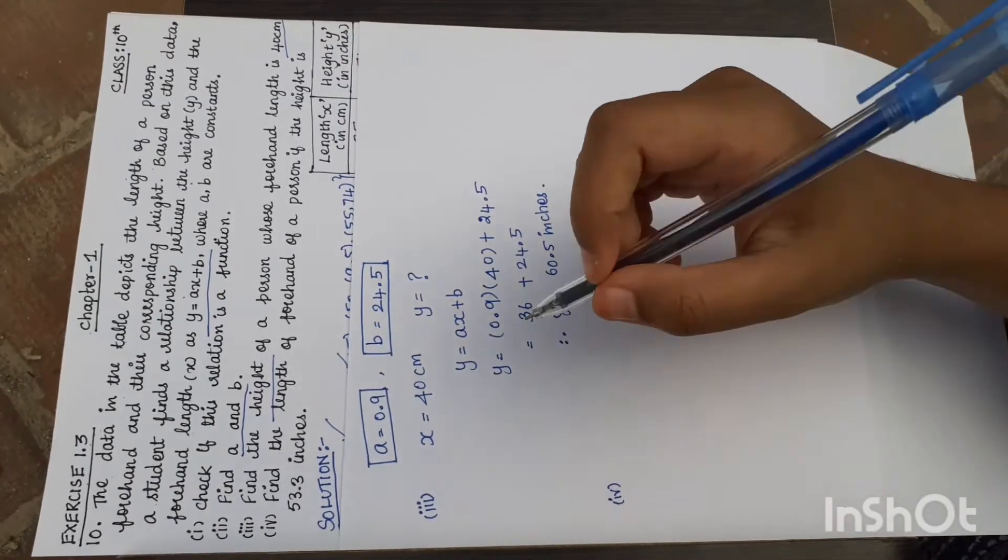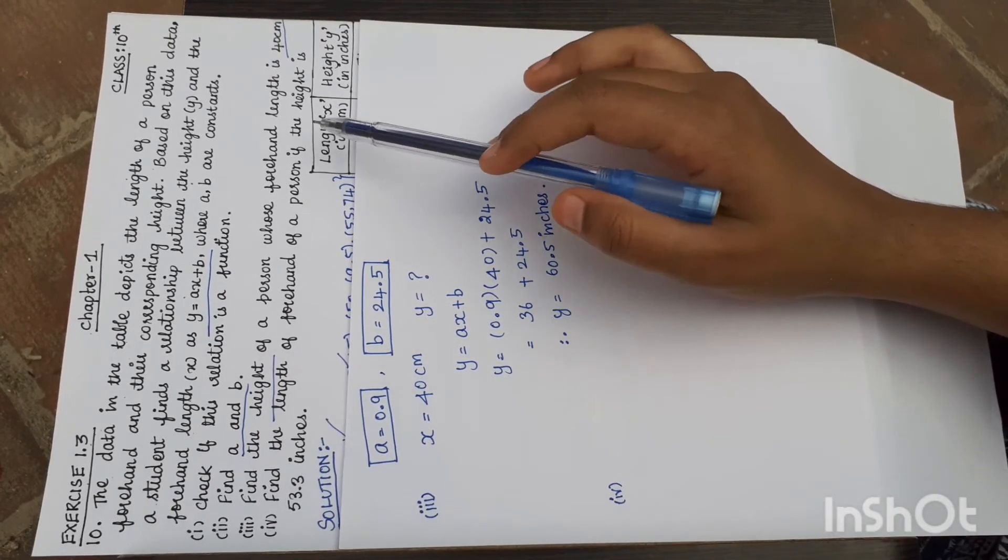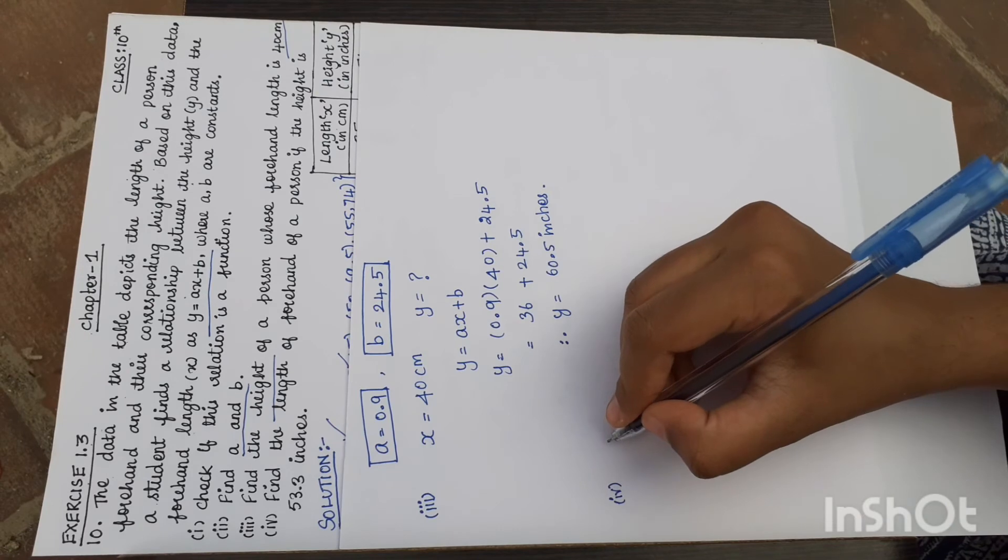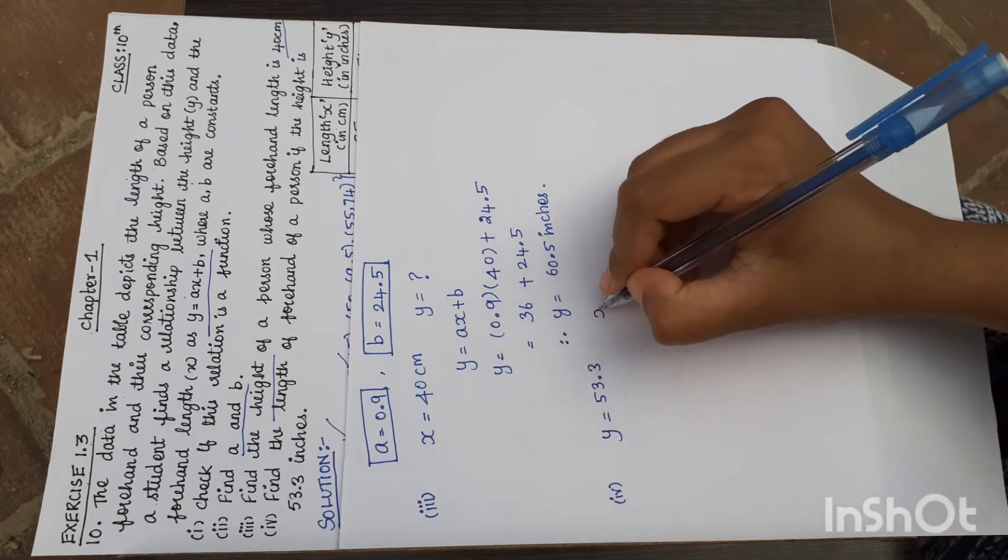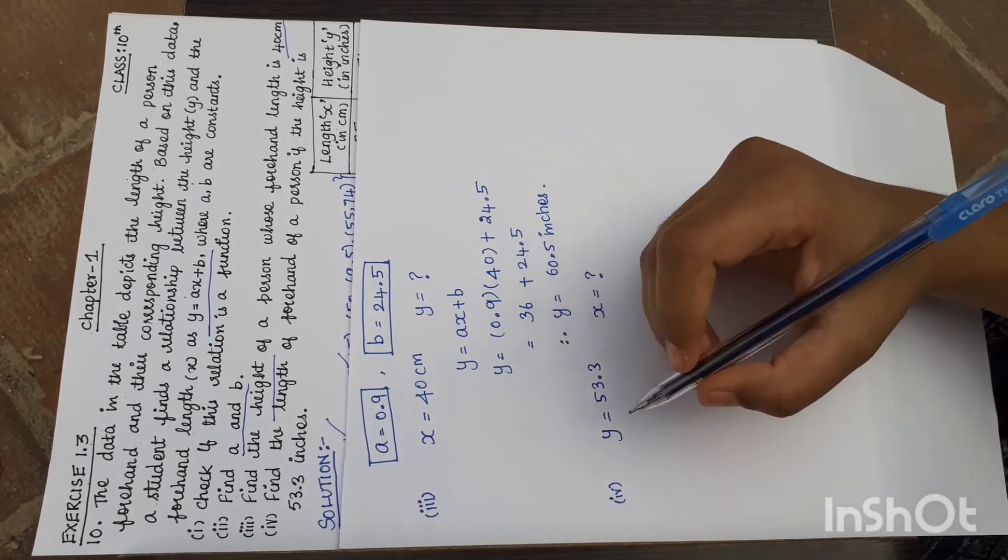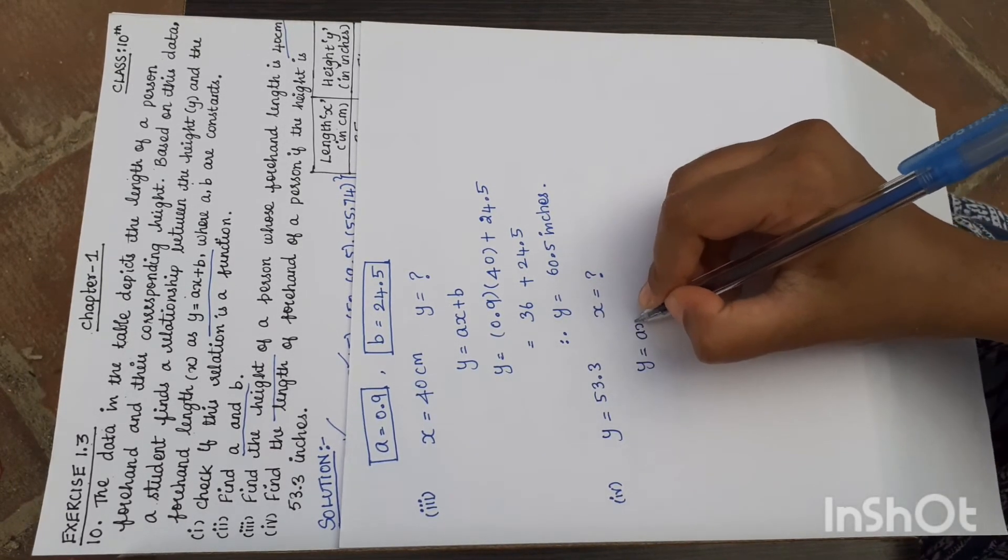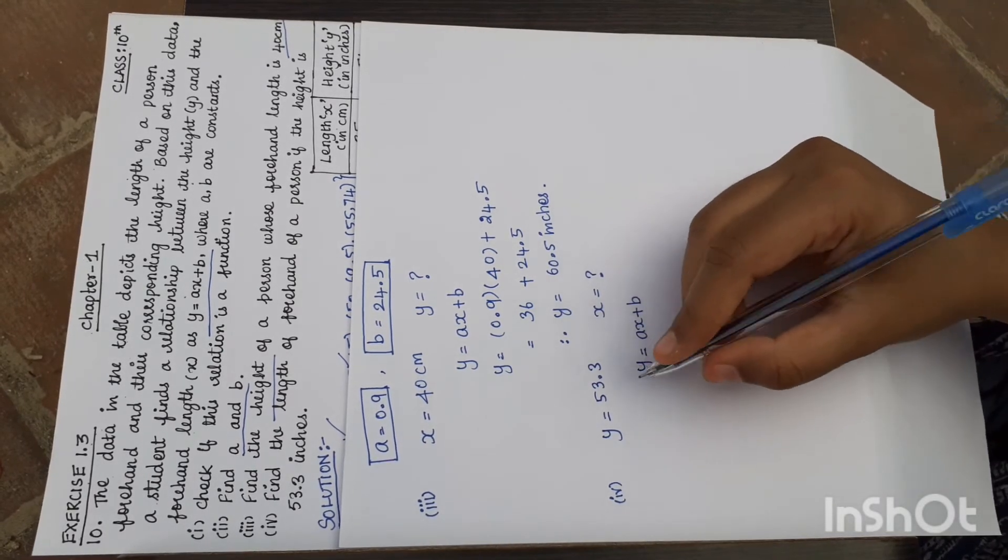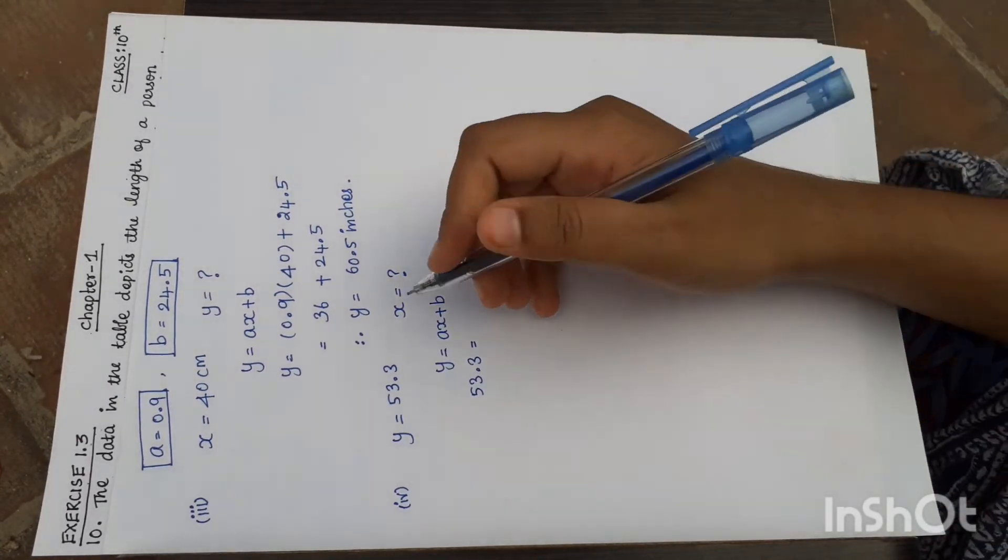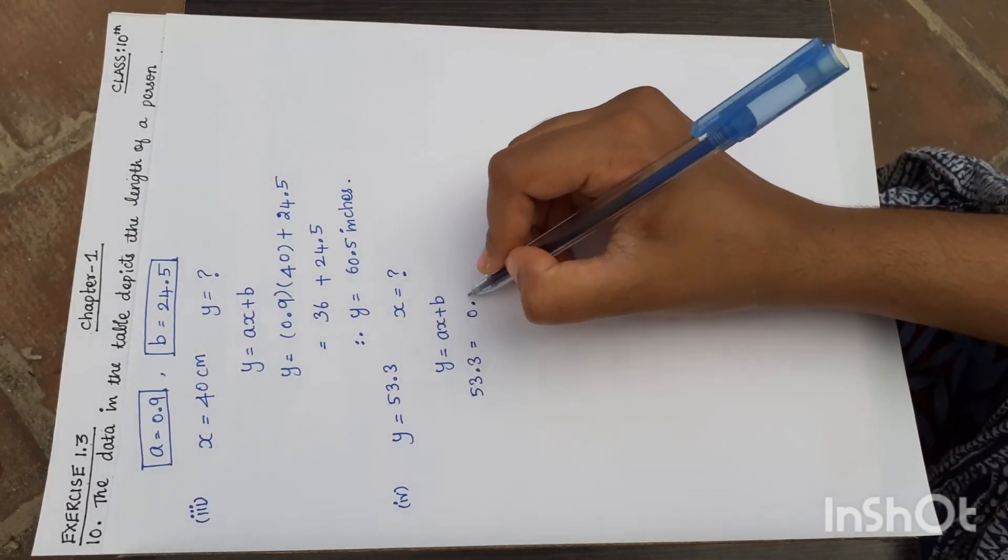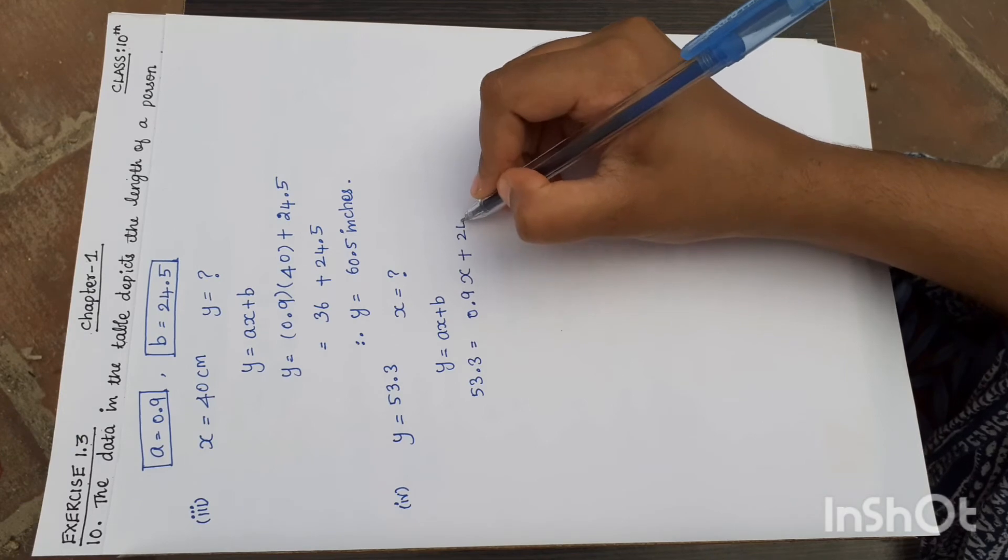Fourth subdivision: find the length of a forehand if the height is 53.3 inches. Height is y, so y is given as 53.3 inches. We need to find x. Using y equals ax plus b, 53.3 equals 0.9x plus 24.5.